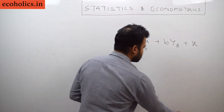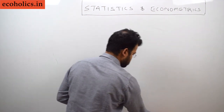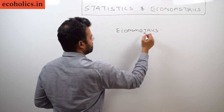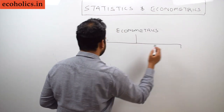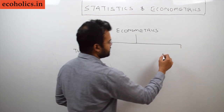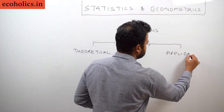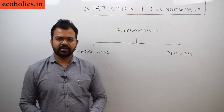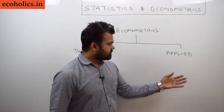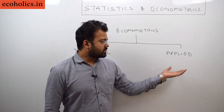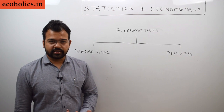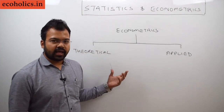Now moving forward: there are two types of econometrics analysis. Number one is theoretical econometrics, and number two is applied econometrics. Under theoretical econometrics we understand the theory in general, while under applied econometrics we look at real world economic phenomena — like consumer demand theory, investment, consumption, and production theory. We apply those principles to real world phenomena that already exist. This is the major difference between theoretical and applied econometrics.